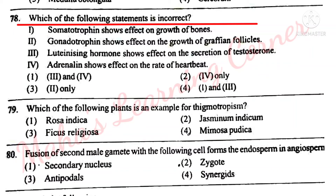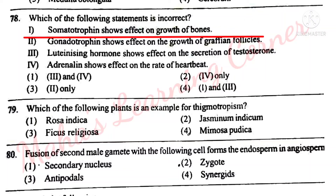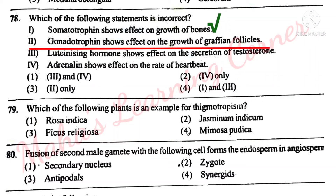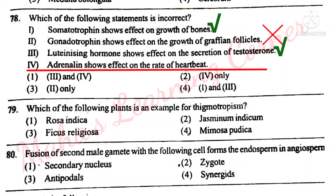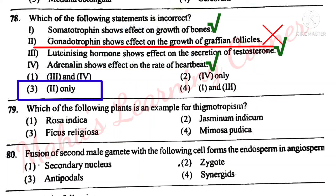Which of the following statements is incorrect? Somatotropin shows effect on growth of bones – correct. Gonadotropin shows effect on the growth of graffian follicles – wrong. Luteinizing hormone shows effect on the secretion of testosterone – correct. Adrenaline shows effect on the rate of heartbeat – correct. So option 2 only is incorrect. Gonadotropin actually shows effect on activity of ovary and testes.